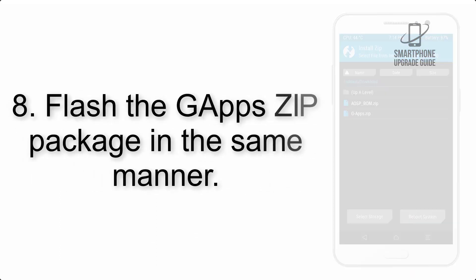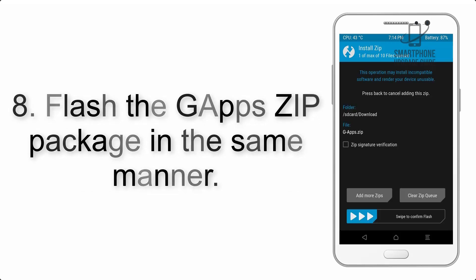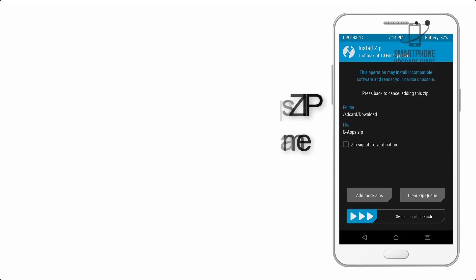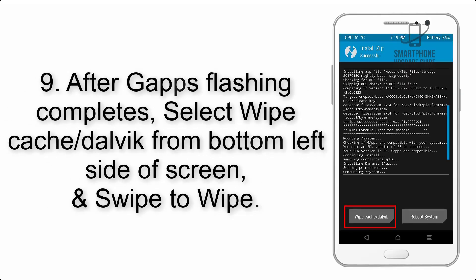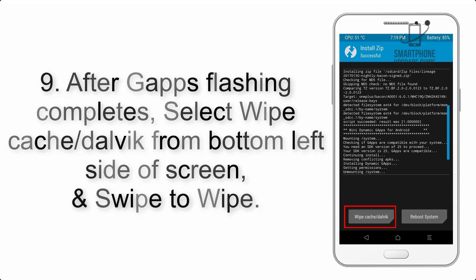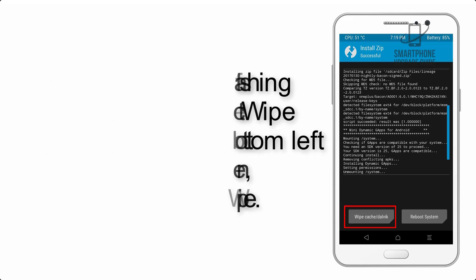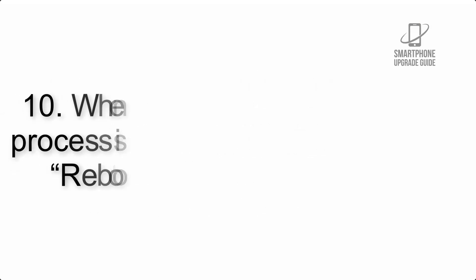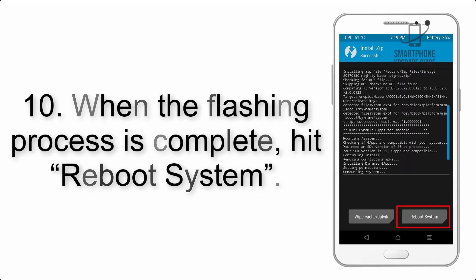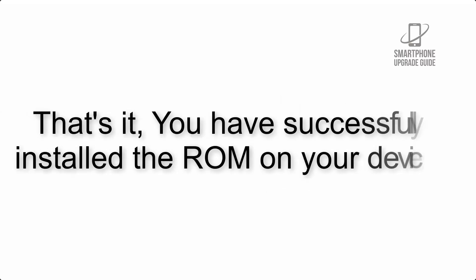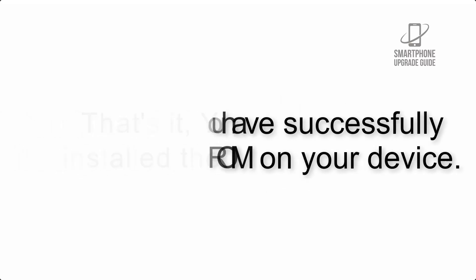Step 8: Flash the GApps zip package in the same manner. Step 9: After GApps flashing completes, select Wipe Cache and Dalvik from the bottom left side of the screen and swipe to wipe. Step 10: When the flashing process is complete, hit Reboot System. That's it — you have successfully installed the ROM on your device.